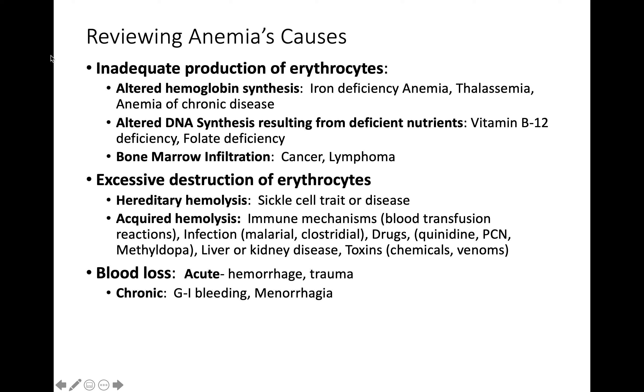Blood loss can be acute — hemorrhage from trauma such as a car or airplane accident — or chronic, like GI bleeding from Crohn's disease or a bleeding ulcer. Menorrhagia is very common in younger women, causing anemia through excessive blood loss during menses. For students going to the hospital, look at the CBC — complete blood count — especially for anemic patients, and try to identify the type by noting the MCH, MCV, and MCHC values.